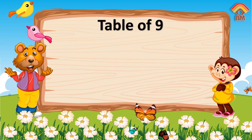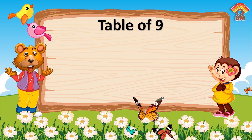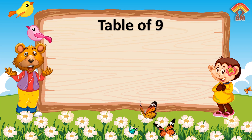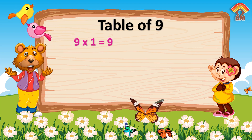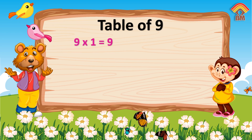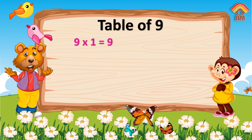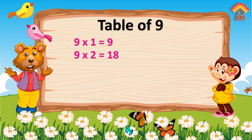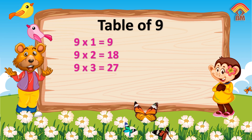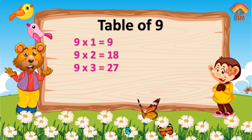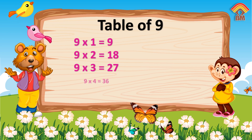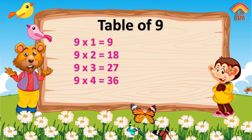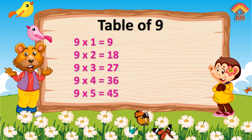Table of Nine. Nine ones are nine. Nine twos are eighteen. Nine threes are twenty-seven. Nine fours are thirty-six. Nine fives are forty-five.